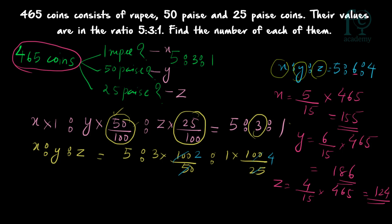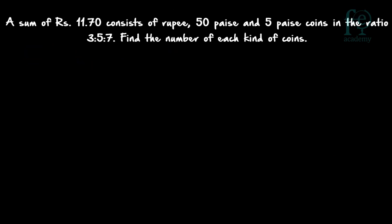In summary, the ratio 5:3:1 was given for values, and from that we derived the number ratio x:y:z, then found the actual counts. Question 2: A sum of rupees 11.70 consists of 1 rupee, 50 paise, and 5 paise coins in the ratio 3:5:7. Find the number of each kind.